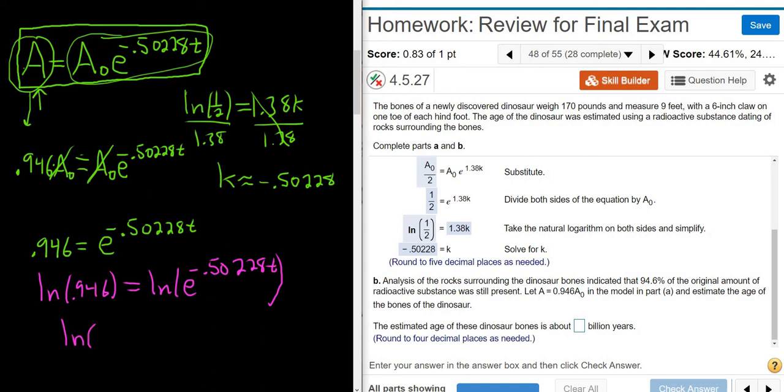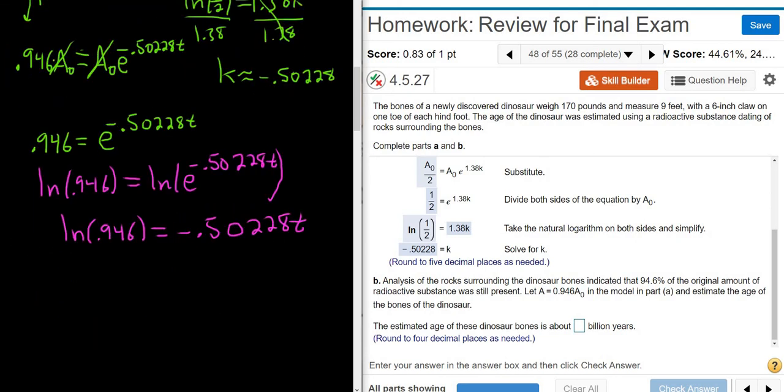So we have LN 0.946. The LN and the E cancel, so we have negative 0.50228T. And the last thing to do is divide by this number here, this negative 0.50228, negative 0.50228.